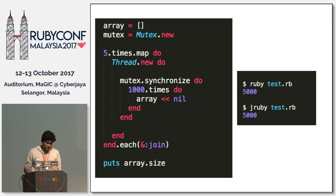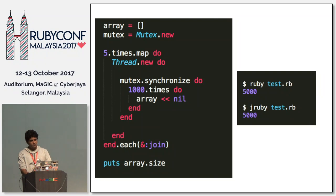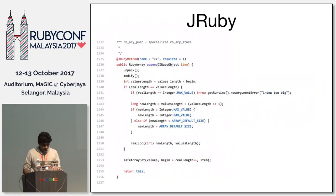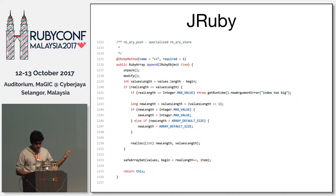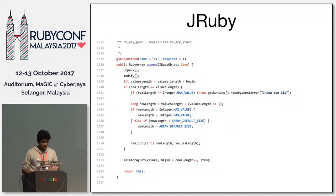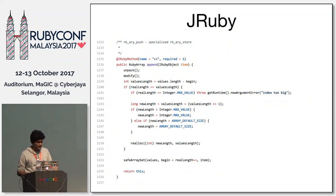If you are interested enough to go through JRuby code, here is the JRuby array append code you can go through. Actually it is most likely similar to the MRI implementation. You can check what they are doing and what their implementation looks like.